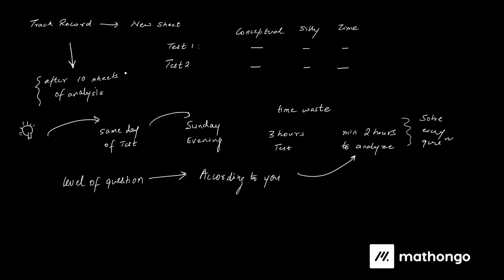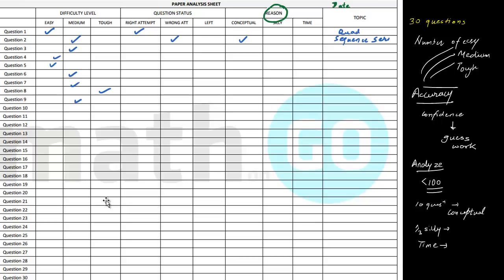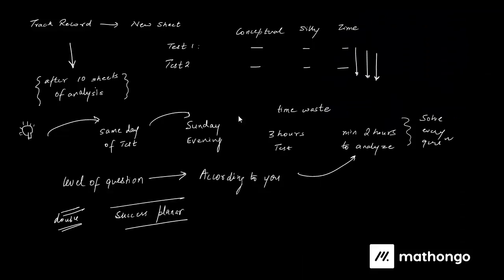Do this minimum 10 times and you will automatically see your result improving by the 10th sheet. If you can do this continuously for the remaining 6 months for class 12th and droppers, and 1 year and 6 months for class 11th, believe me your score will double. This is actually part of a success planner. Please do this activity if you want to improve your score. The sheet will be available in the description link — just go download it, take as many printouts as you want, and start analyzing yourself on each test. Do not feel demotivated by your current scores — just worry about how much you are improving.